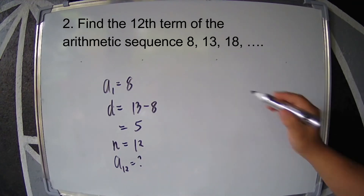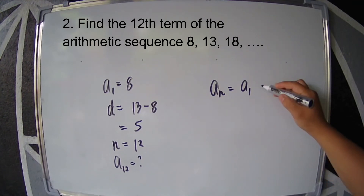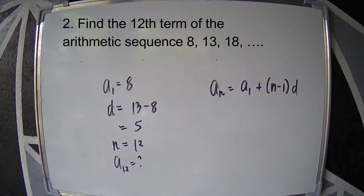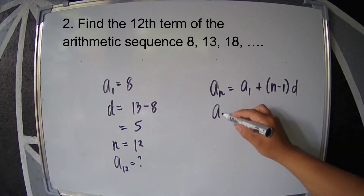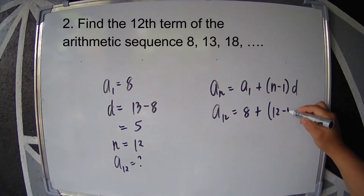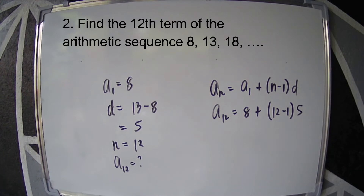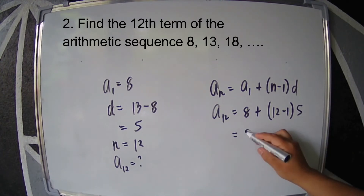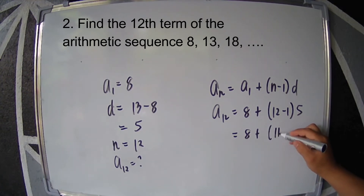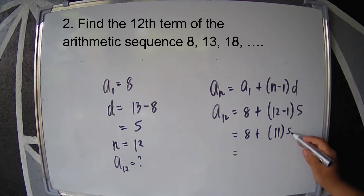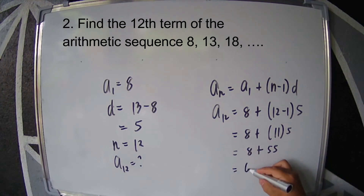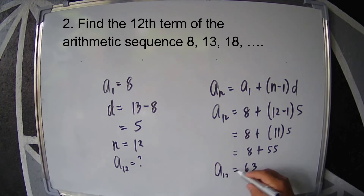Using the formula, a sub n equals a sub 1 plus the quantity n minus 1 times D. Substitute the values: a sub n equals 8 plus the quantity 12 minus 1 times 5. Simplify: 12 minus 1 is 11, and 11 times 5 is 55. Then 55 plus 8 is 63. So the 12th term is 63.